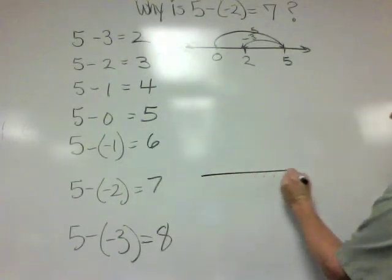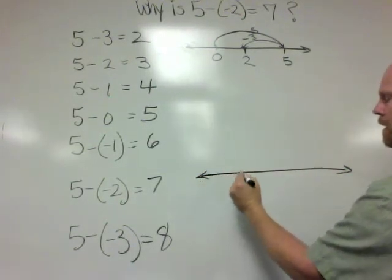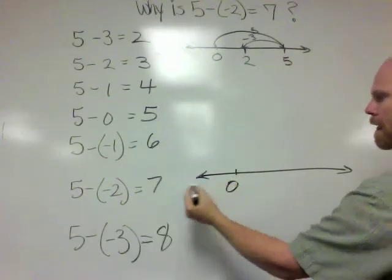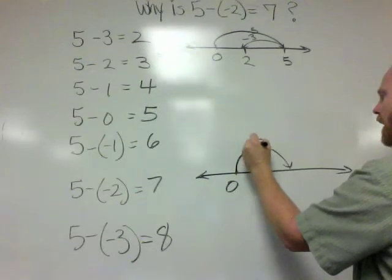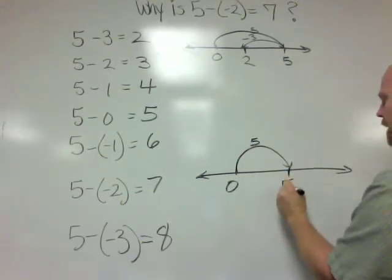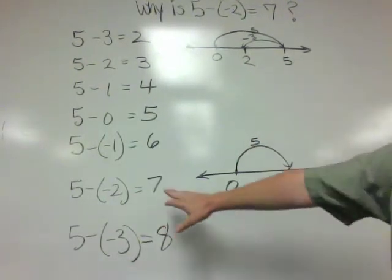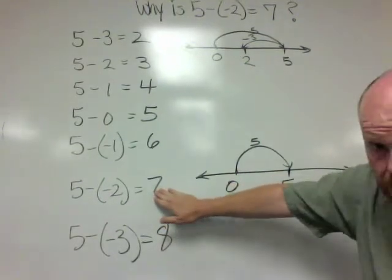So let's use another number line. So we're going to start off at 0. 5 means 5 units to the right, so a hop of 5 units placing us at the 5. Now we know that the answer is 7. We know it.